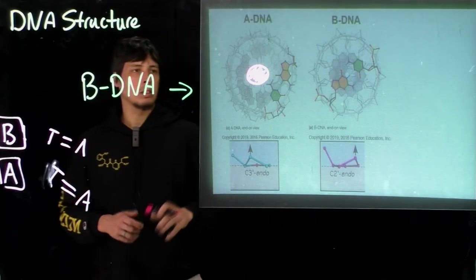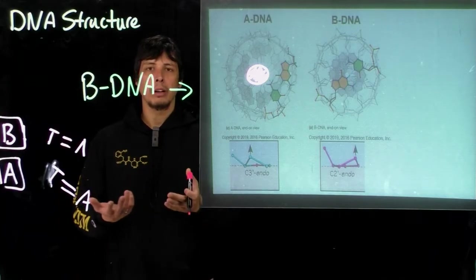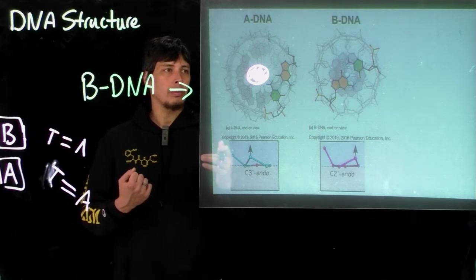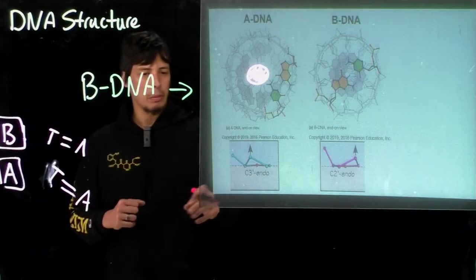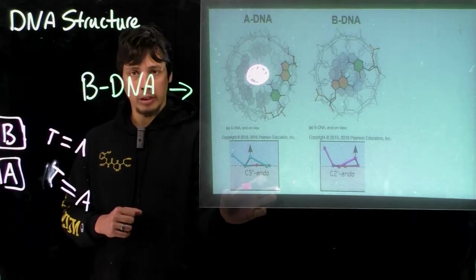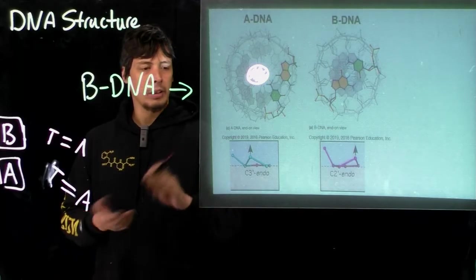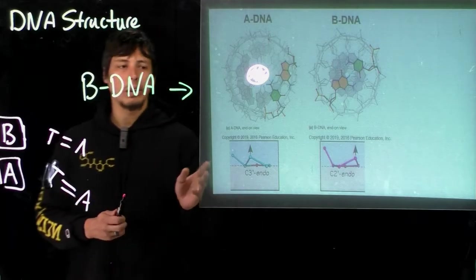And so what actually causes these different major structural differences seems very minor but is really important for this conformational change. So remember that the sugar ring, the deoxyribose ring, can pucker. And so remember we talked about C2' and C3' endo and exo.